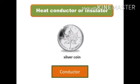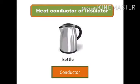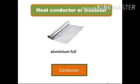Is a silver coin a heat conductor or insulator? It is a conductor because silver is a metal that allows heat to pass through it. Is a kettle a heat conductor or insulator? It is a conductor because the kettle is made of metal, but we can hold it easily because its handle is made of bakelite — a material that does not allow heat to pass through it.